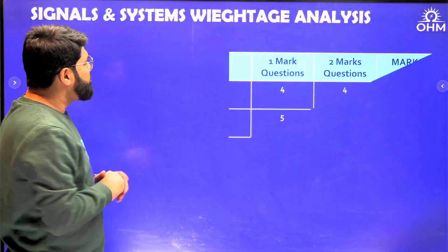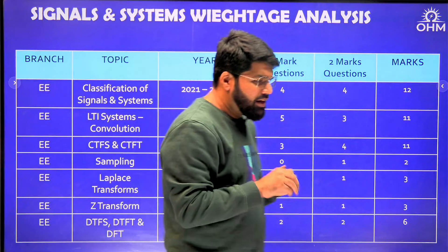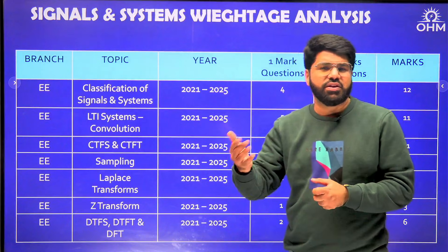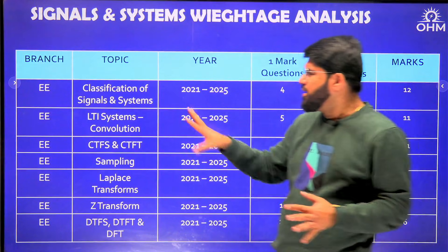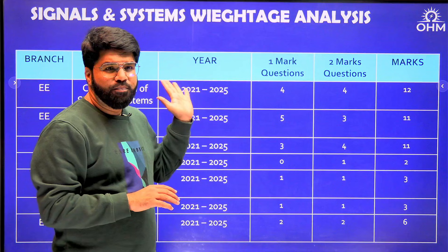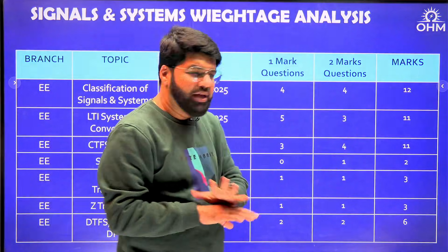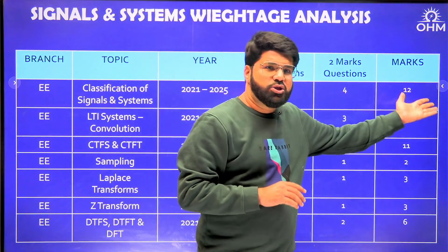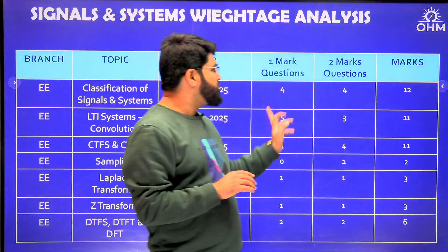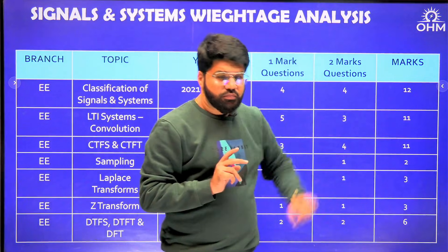For EE, the recent five-year trend shows that the fundamental part is also important — they ask questions directly on energy, power, periodicity, and classification of systems as causal, time-invariant, and linear. Four questions of one mark and four questions of two marks — eight questions in five years for a particular topic is quite good, and these are areas where you can usually score well. LTI systems also had eight questions — five of one mark and three of two marks — totaling eleven marks.